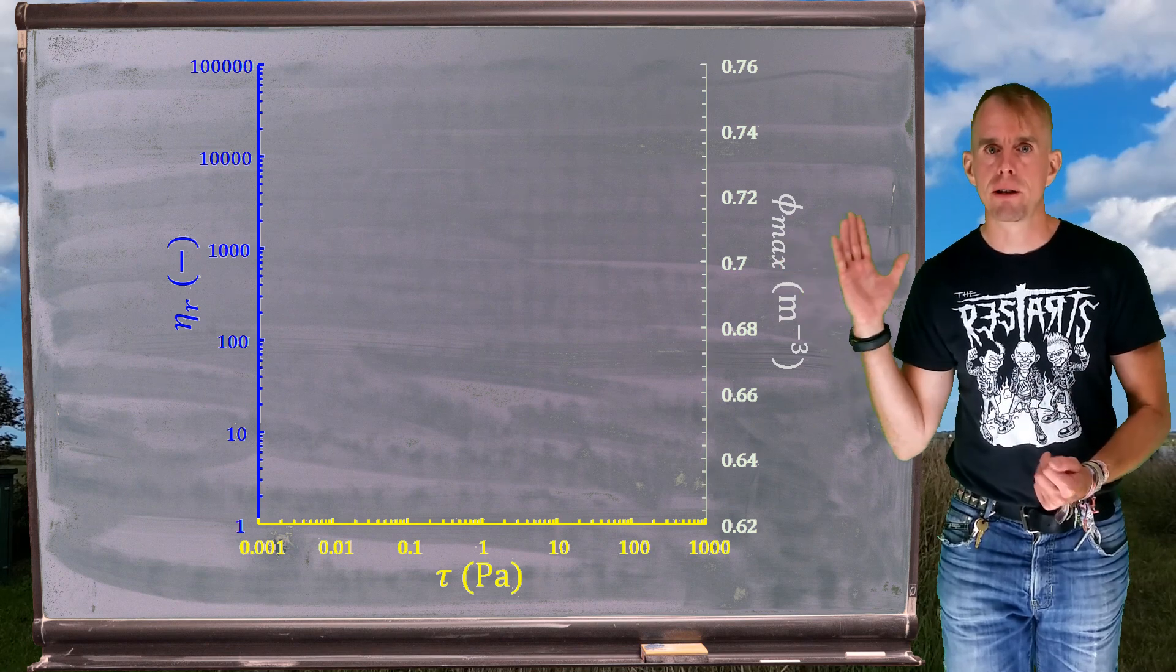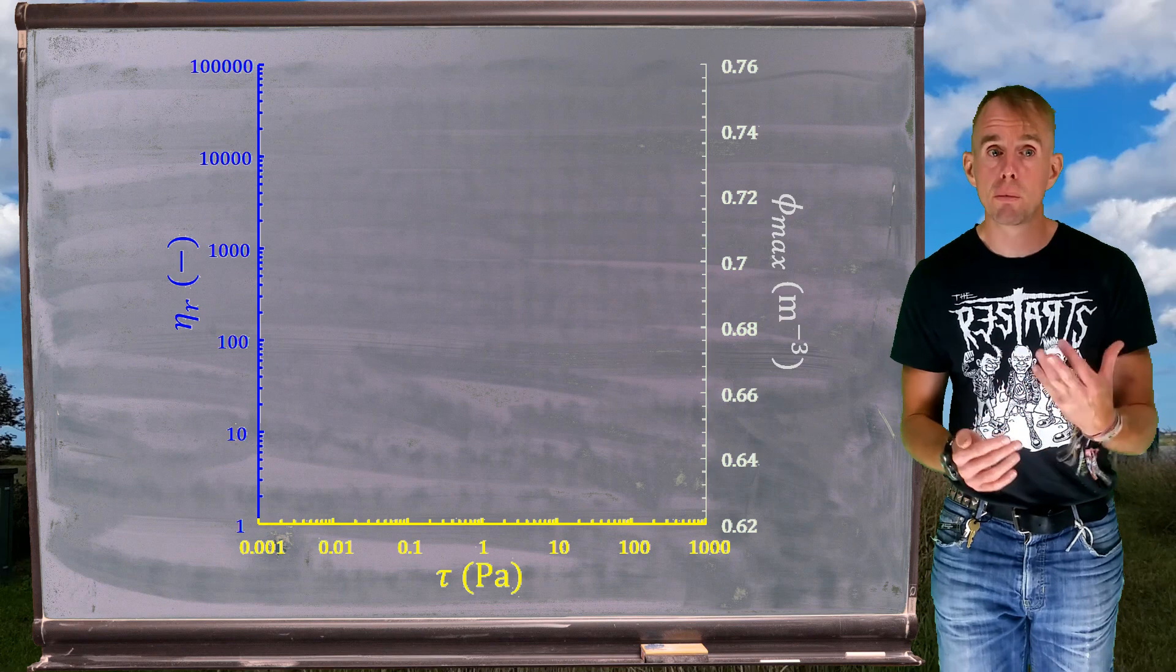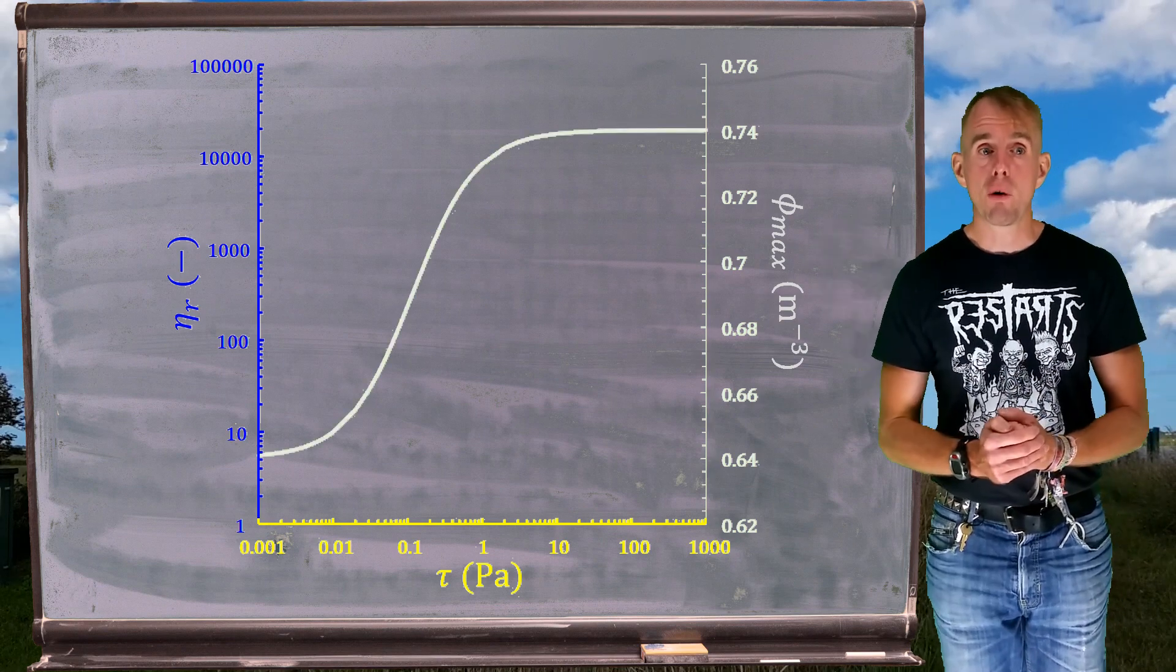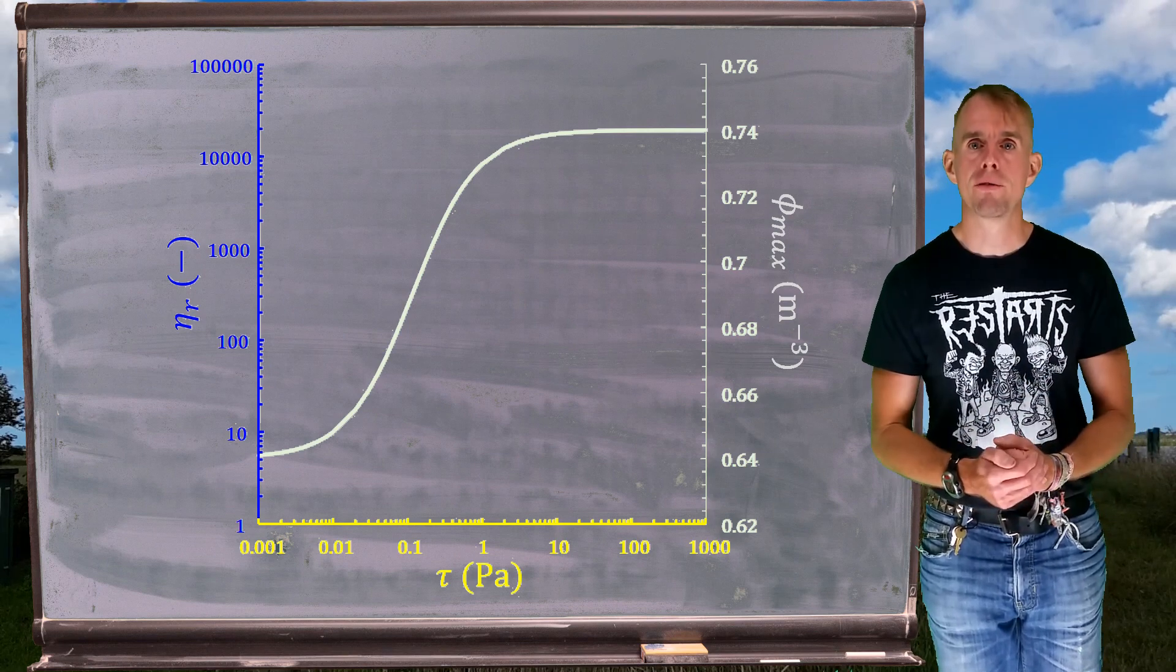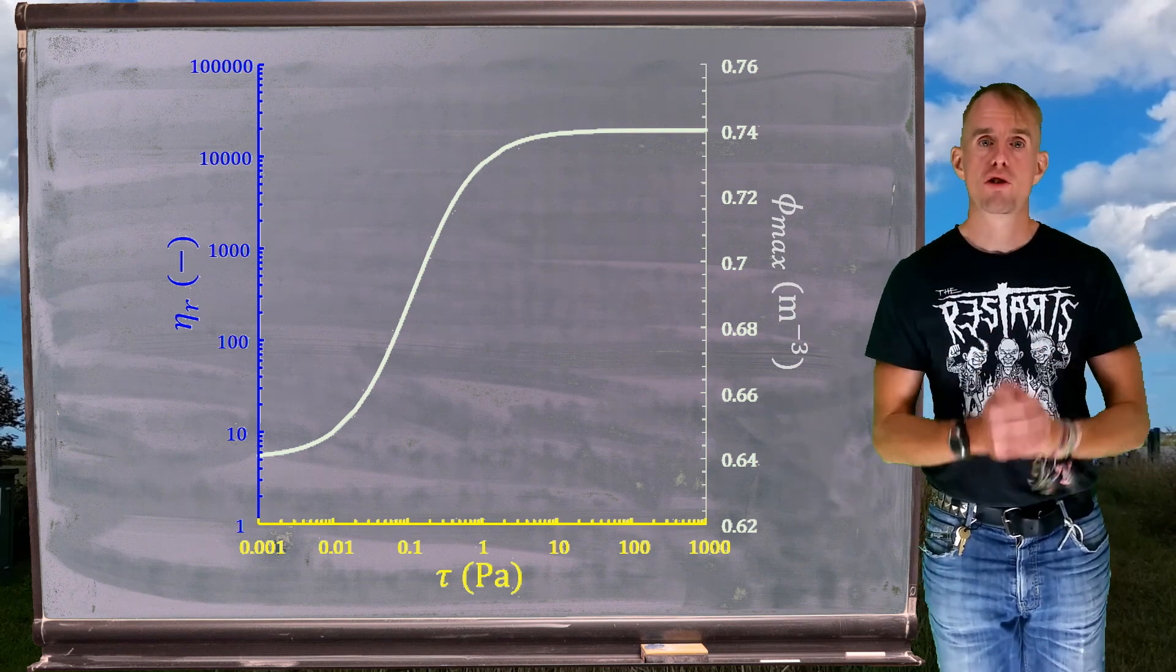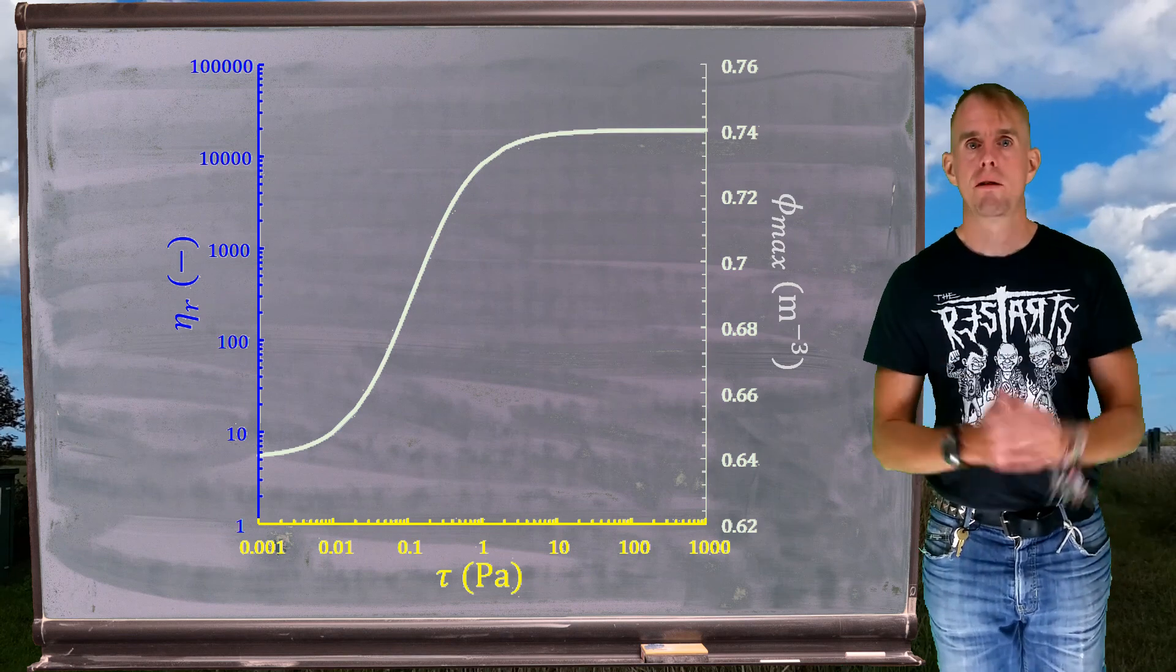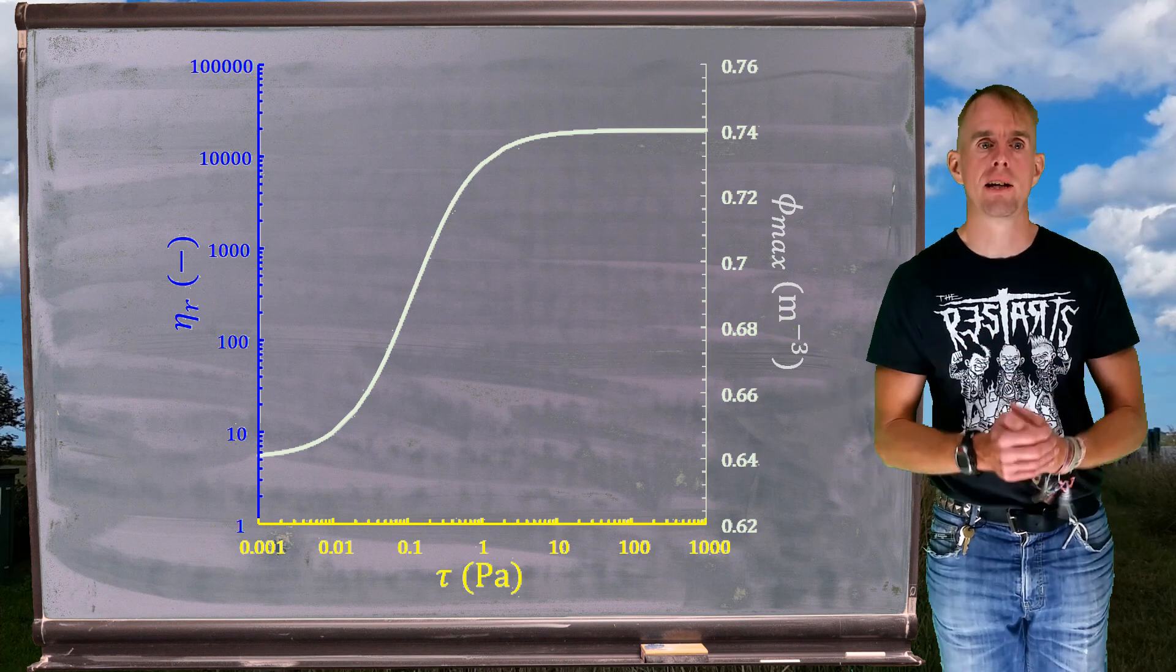Let's start by looking at the maximum packing fraction as a function of shear stress behavior due to Wildermuth and Williams. The shape of the curve that's on the graph now is probably expected when you looked at the form of the equation of Wildermuth and Williams. And it describes a transition between our low stress maximum packing fraction, 0.64, and our high stress maximum packing fraction, 0.74. So that's that shear ordering effect again.